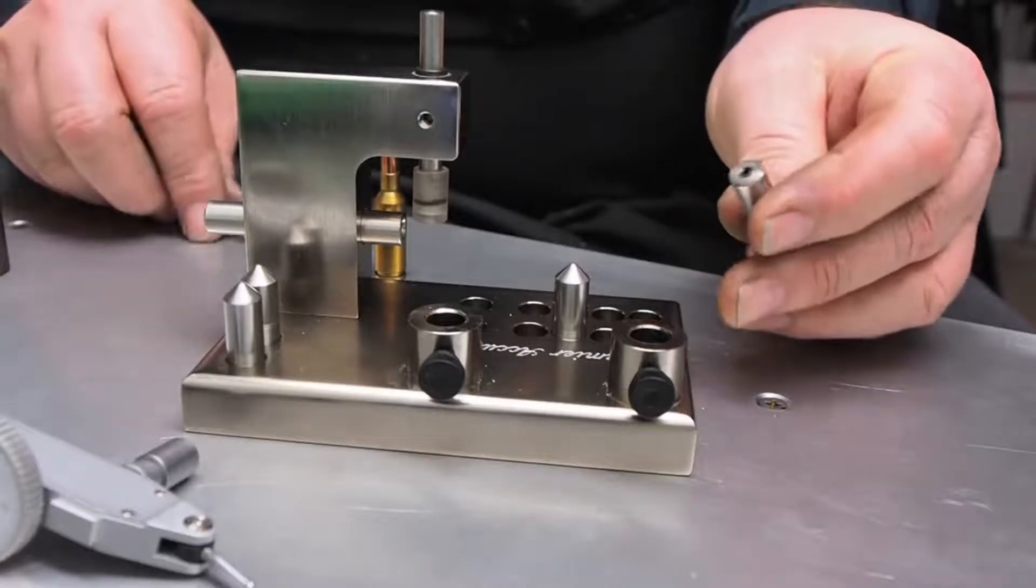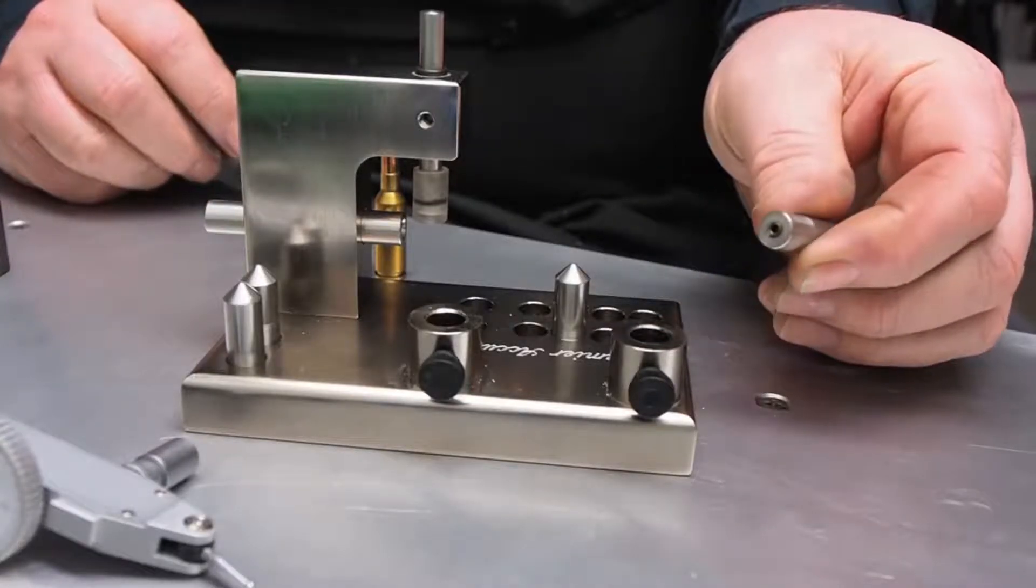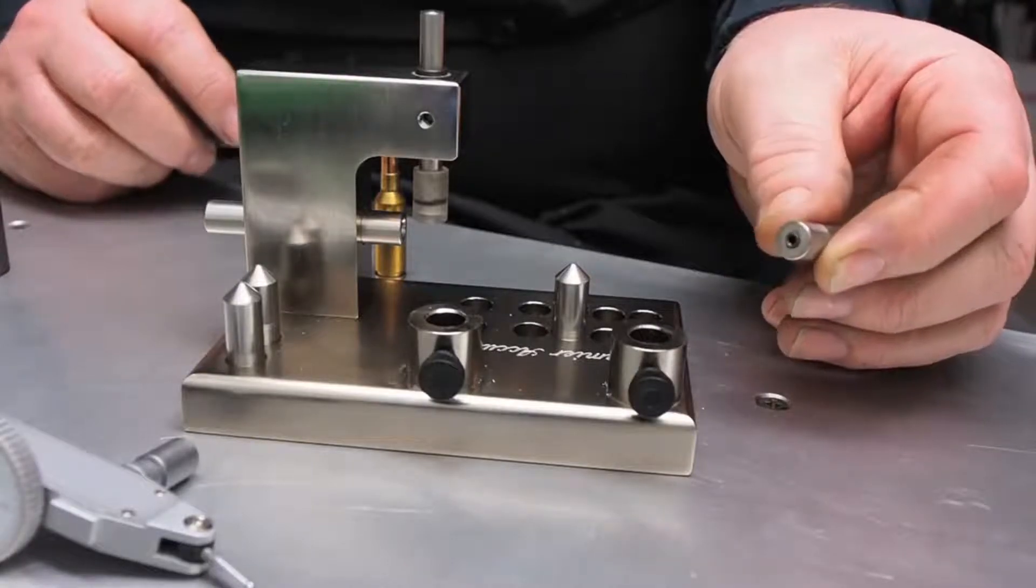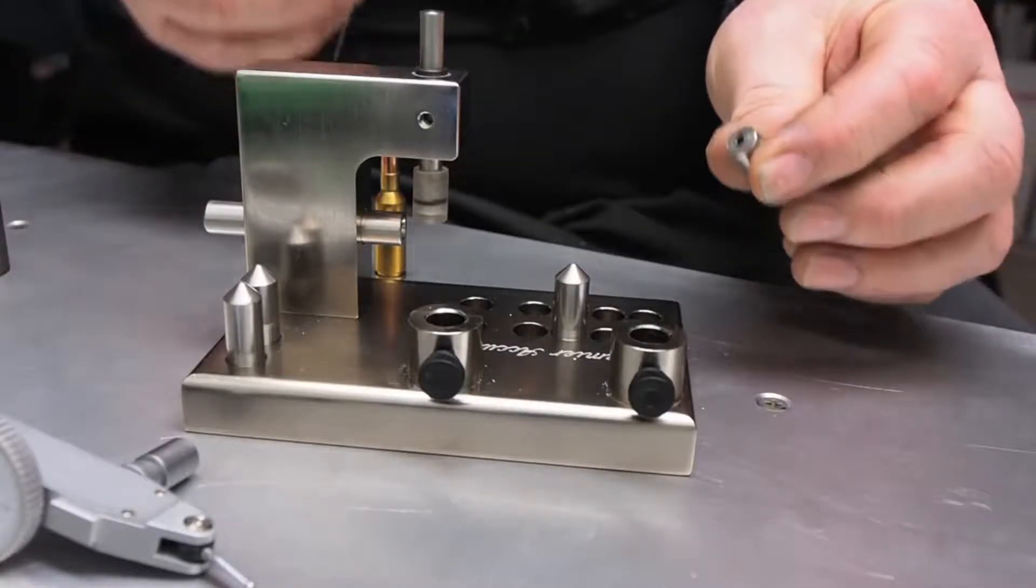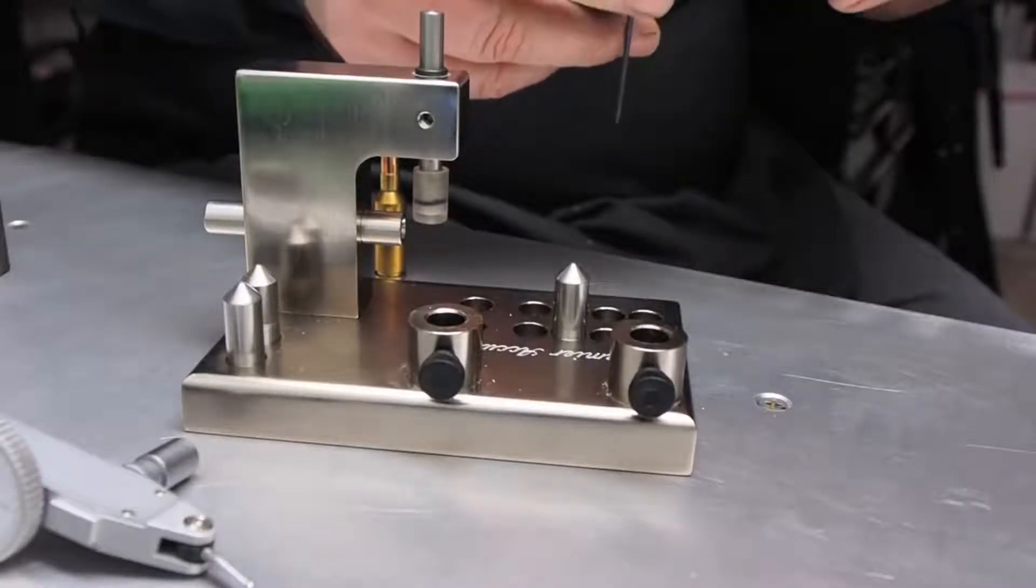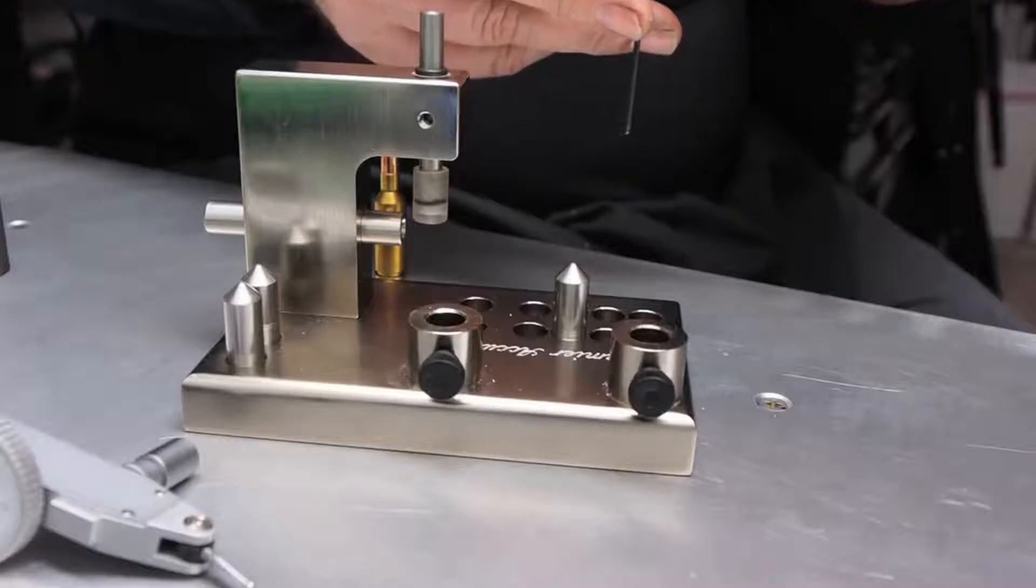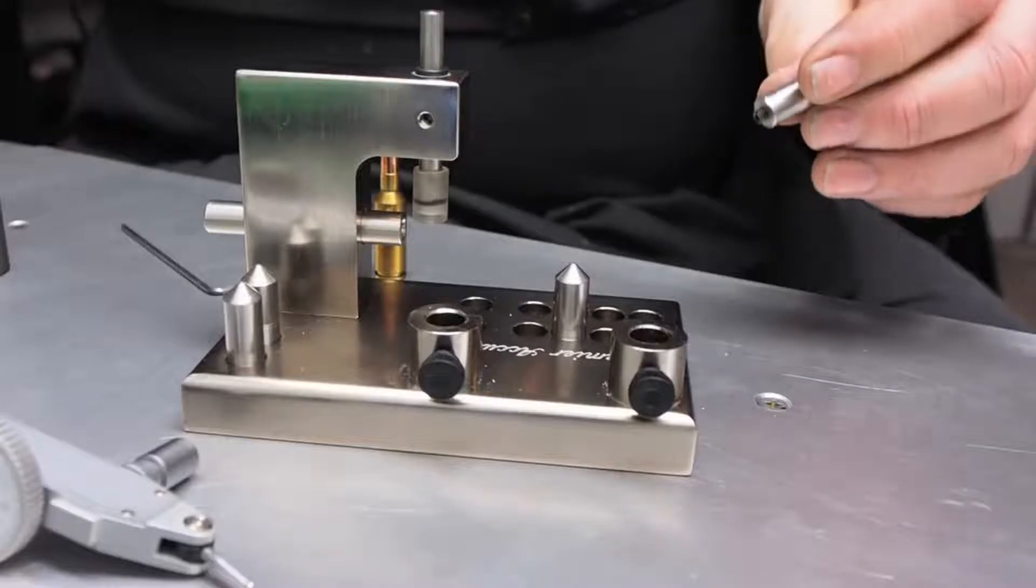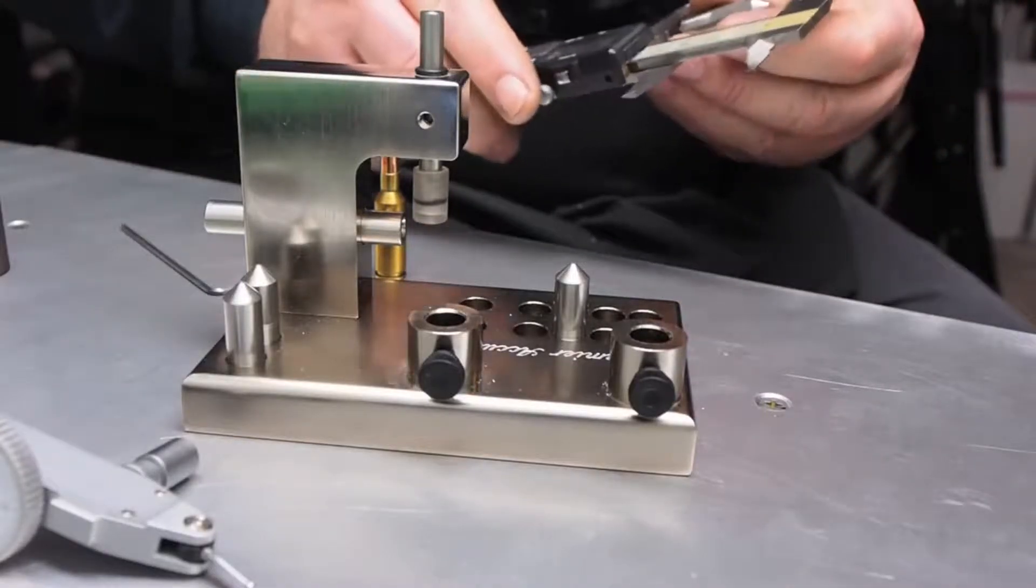I'm going to take our pins that have the leveling jacks in. Those are all the way down. Those were set for Magnum cases. I have an Allen head, and I know for a PPC it's about three turns. One, two, three, which is inch 360. I have that preset.